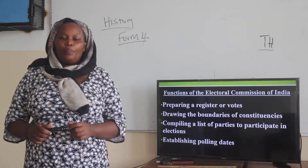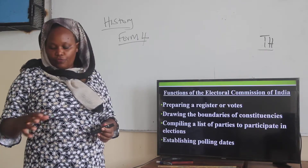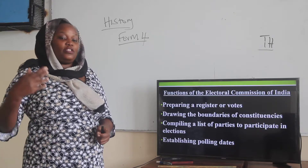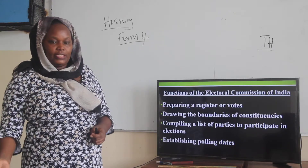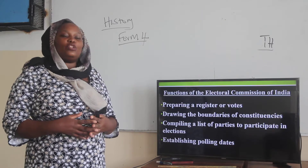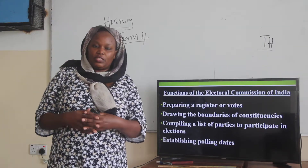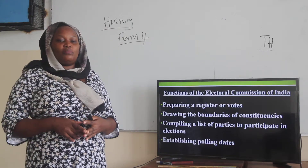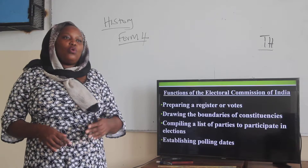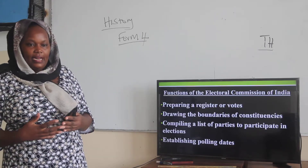One, they are the ones who prepare the register of voters. Voters are supposed to register prior to voting. The purpose of that register is to make sure that whoever is voting is the one who is qualified to vote. It is the work of the Electoral Commission to come up with the guidelines on who is qualified to vote, who can be registered and who cannot be registered.